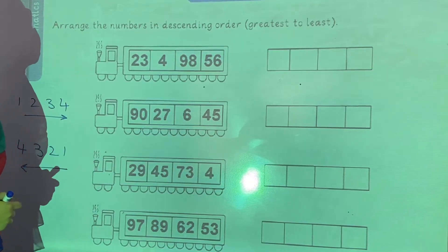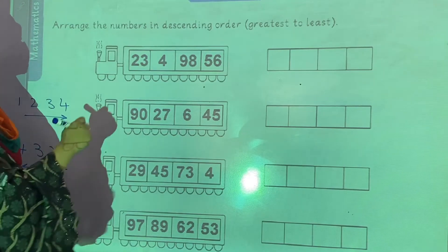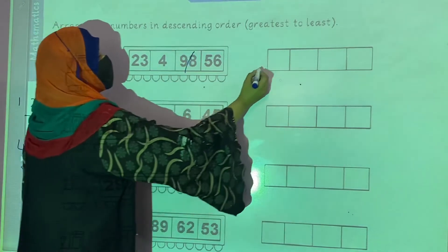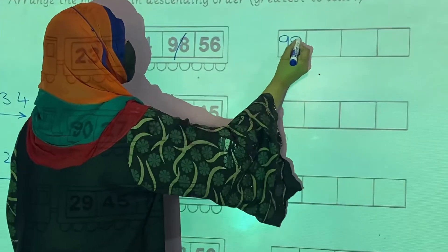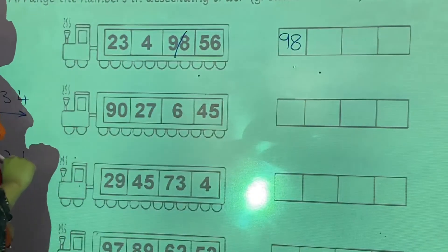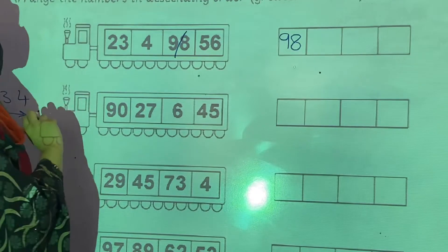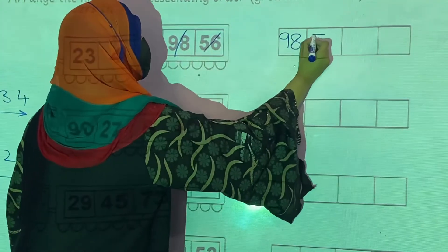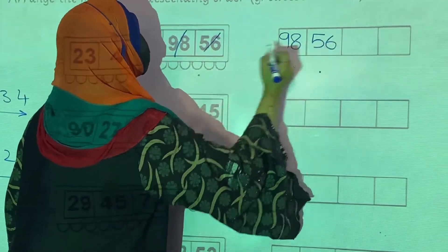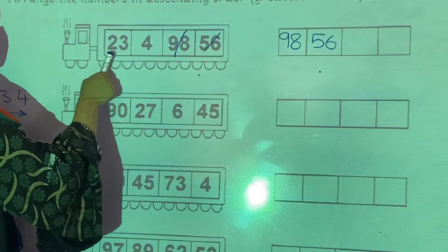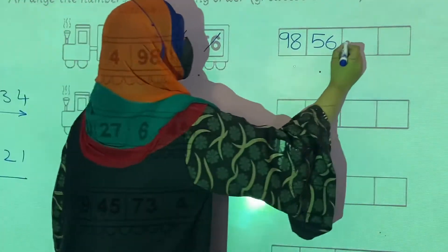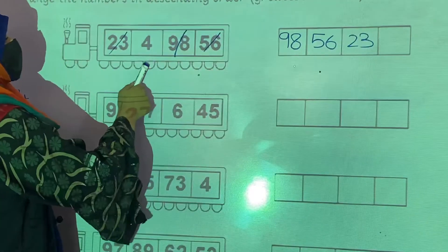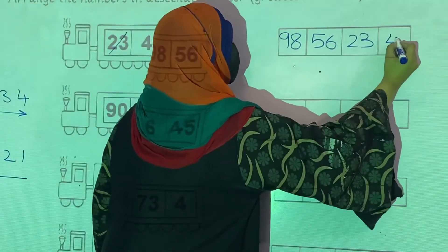Now which number is the greatest one? Here 98 is the greatest number, so in the first box we write 98. After 98, which is the greatest one? 56. In the second box we write 56. After 56, we write 23 in the third box. And the last number is 4, in the last box.